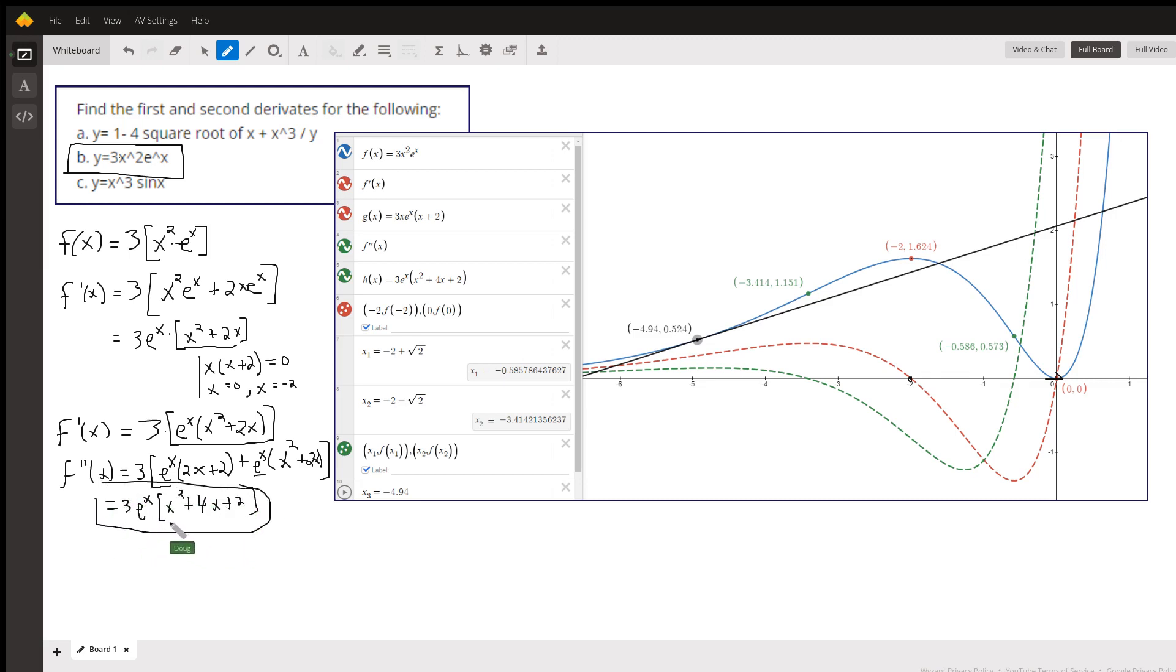That equals zero when this factor equals zero, which I've solved by the quadratic formula to get those answers. And those actually give me points of inflection where the curve changes from concave up to concave down at that point of inflection.